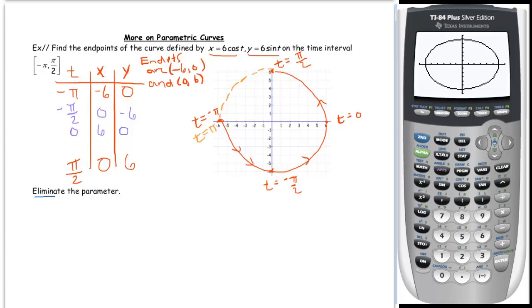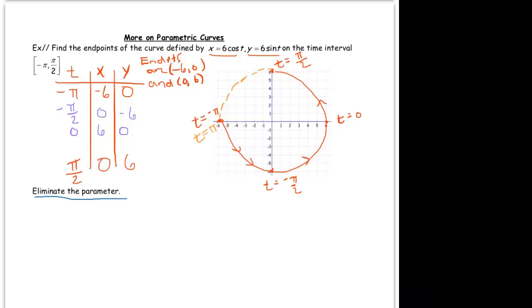You can get different pieces of this whole graph depending on the time interval you choose. Now, I want to focus your attention on eliminating the parameter. What does that mean? It means to rewrite or write the equation that just has the x's and the y's. In other words, the ones that you're so used to. Eliminating the parameter means what's the equation of this curve using just x's and y's. If you remember from algebra, circles that are centered at the origin have equations x squared plus y squared equals r squared. So this equation here, just by looking at it, is x squared plus y squared equals, the radius is 6, so 6 squared, 36.